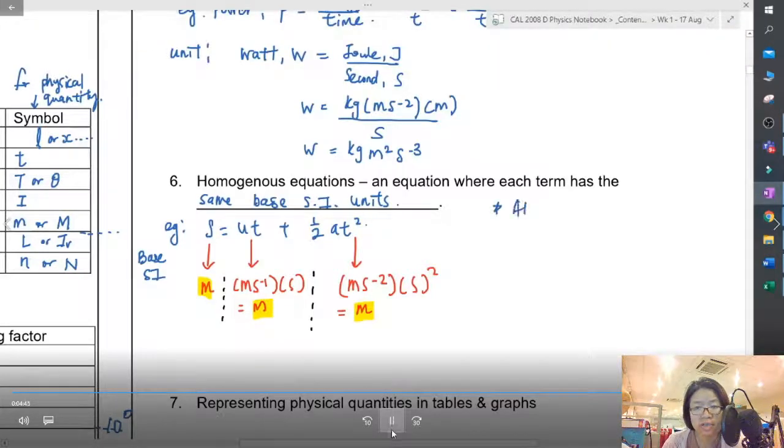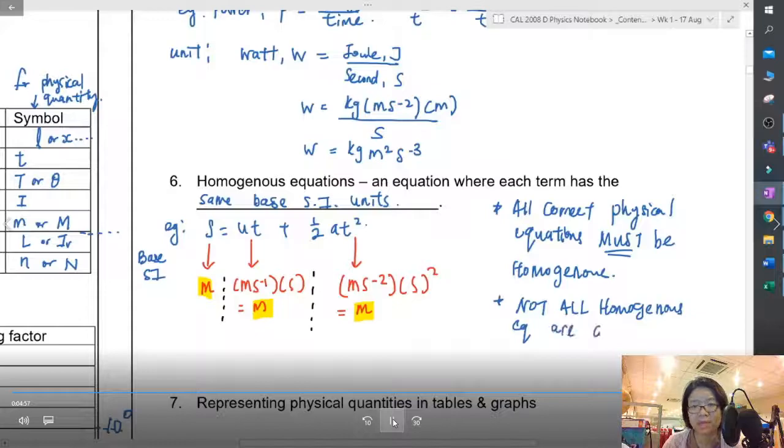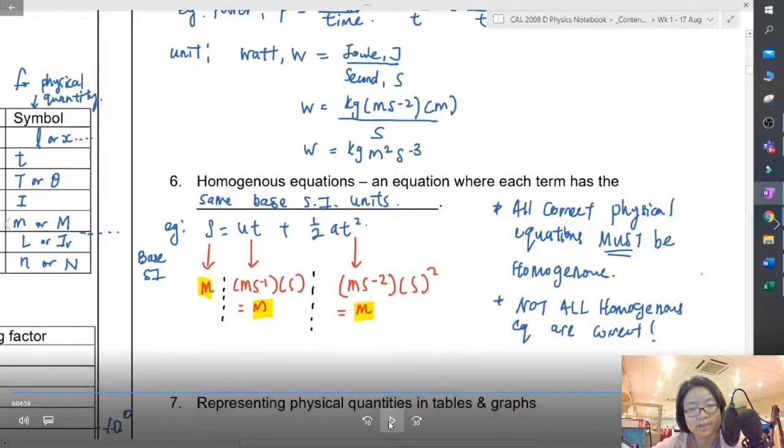But just because they have the same unit doesn't mean it's correct. So all correct equations must be homogeneous. But not all homogeneous equations are correct. All physics teachers must be good in physics, but not all people who are good in physics are good at teaching physics. It's two different things.